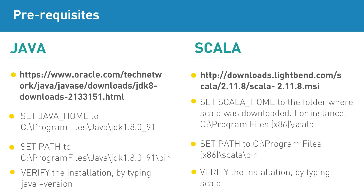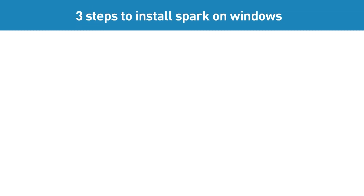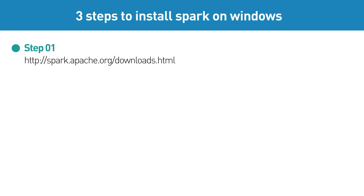Once you install Java and Scala, there are three steps to install Spark on Windows. Step one: go to the following link to download Apache Spark.